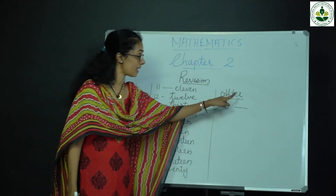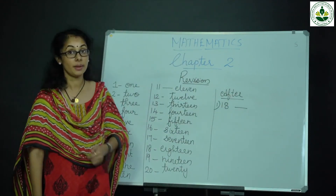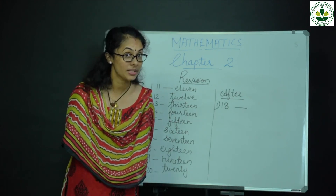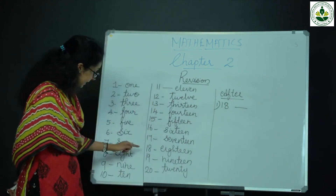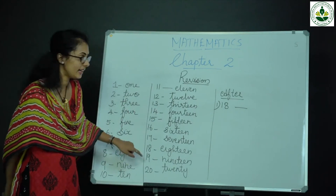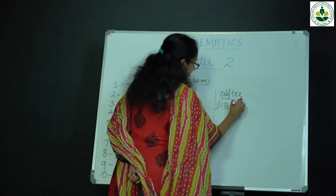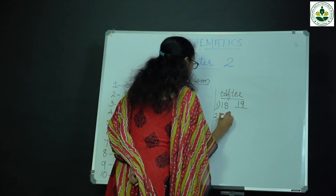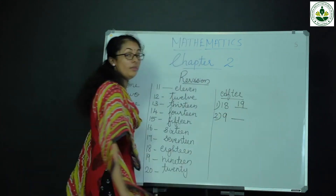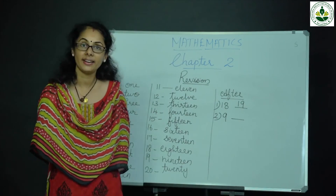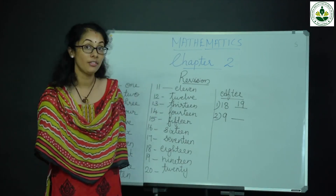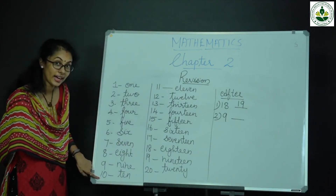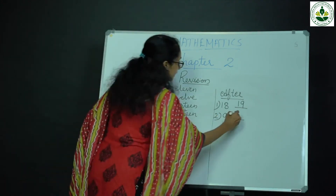Which number comes after 18? Which number comes after 18? Number 19. Which number comes after 9? Which number comes after 9? Number 10.